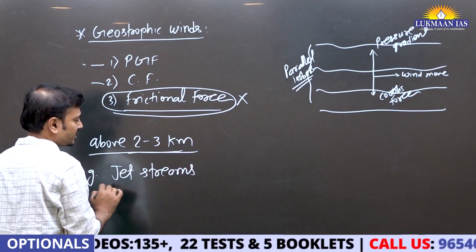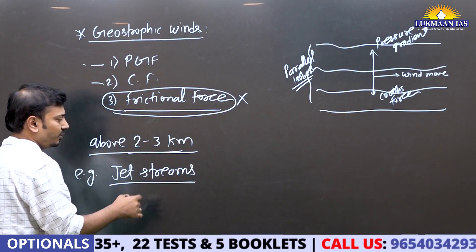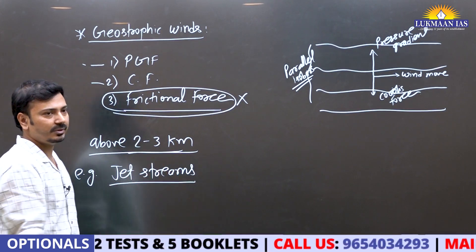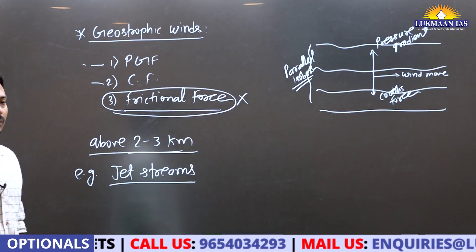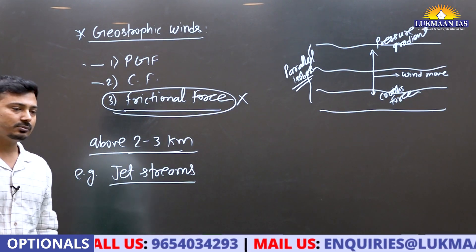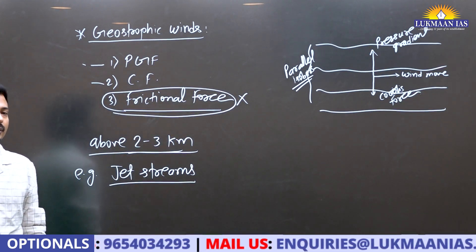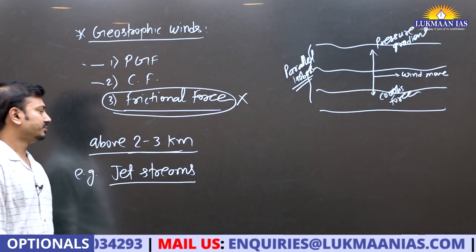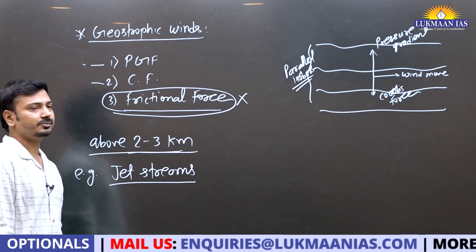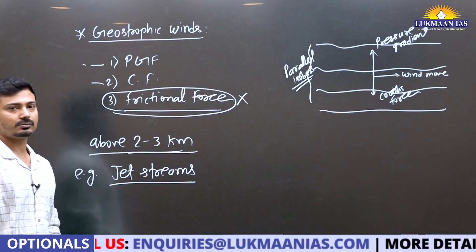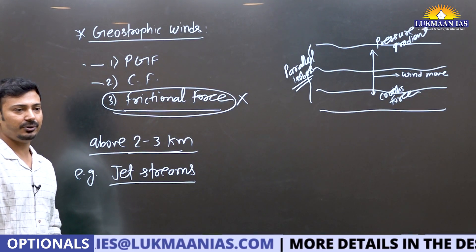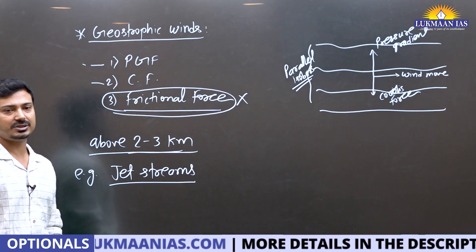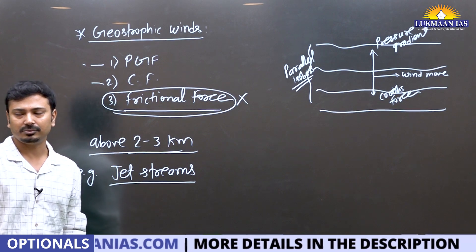The best example of geostrophic winds is jet streams. We are going to learn about air masses and jet streams and their role. I will briefly explain how these jet streams are formed.